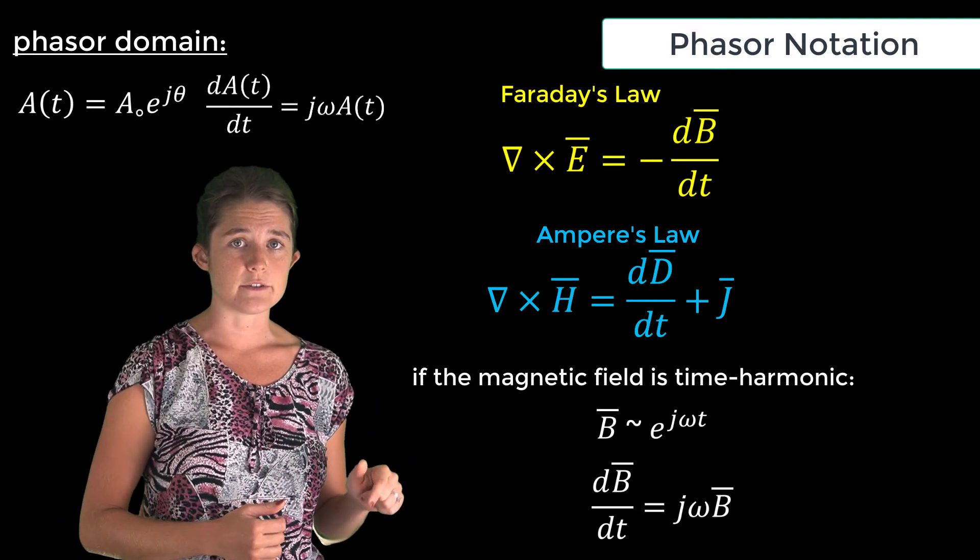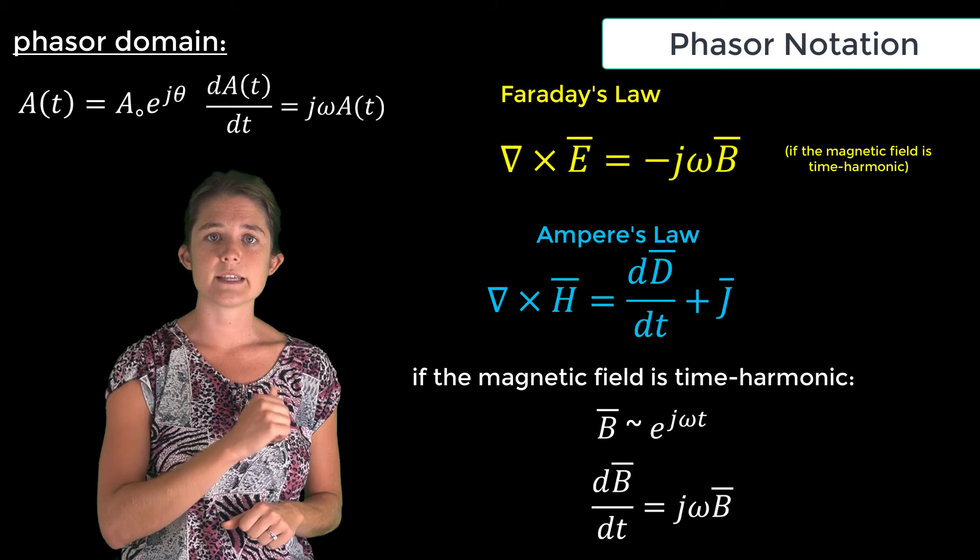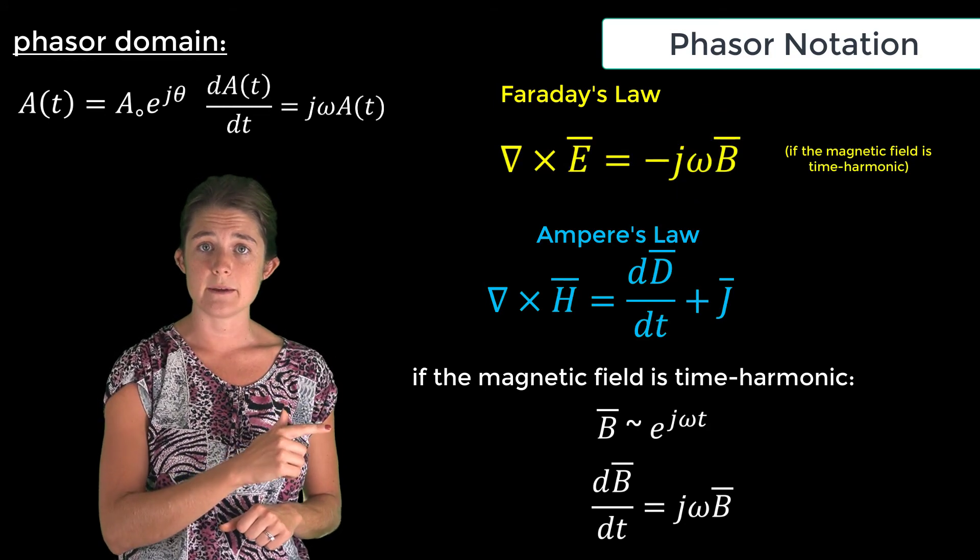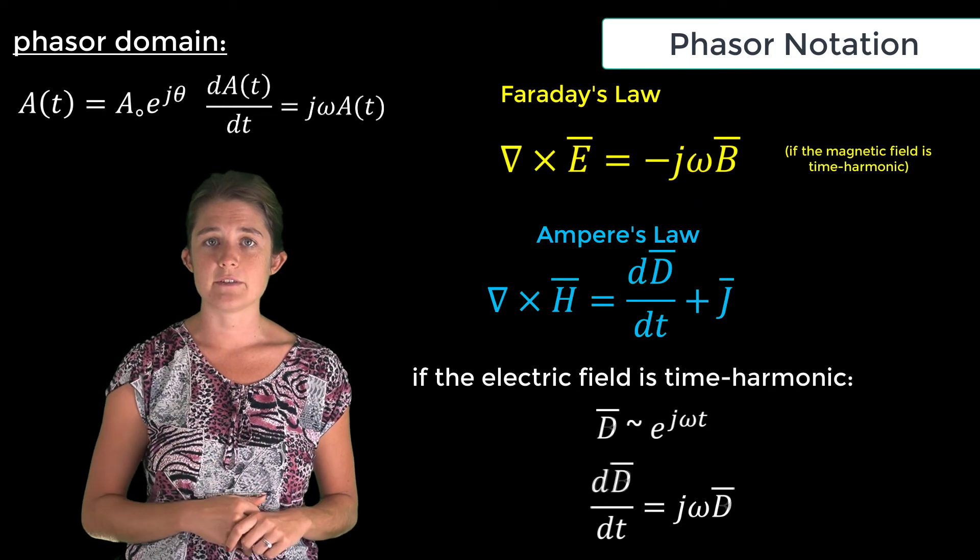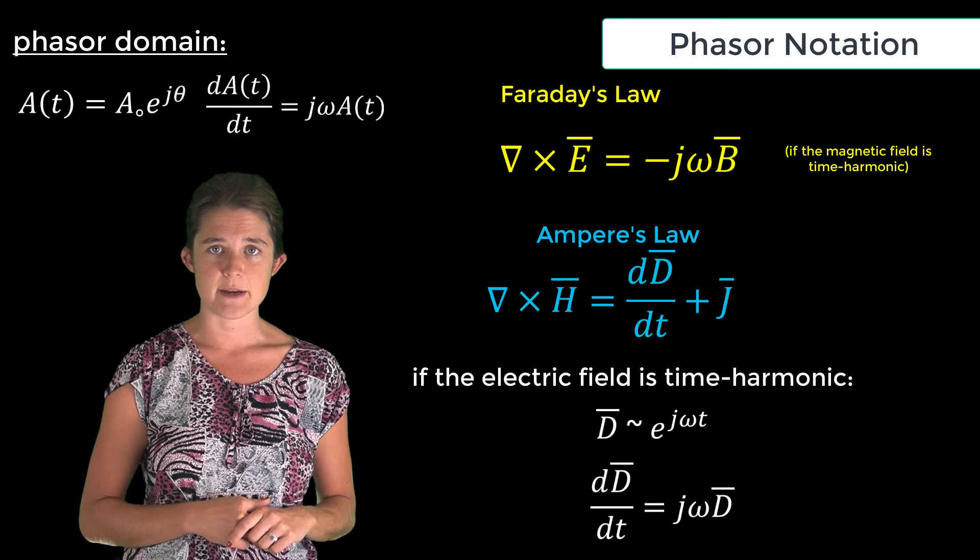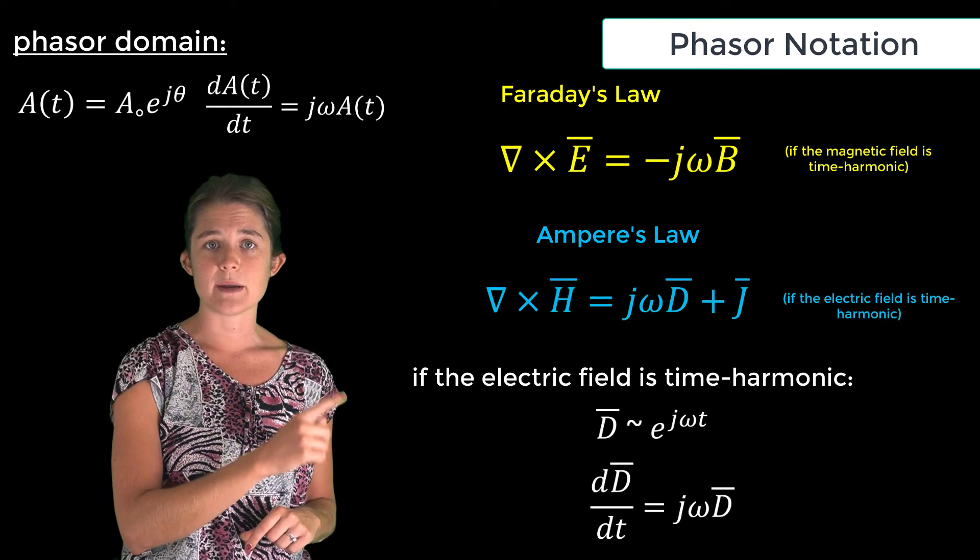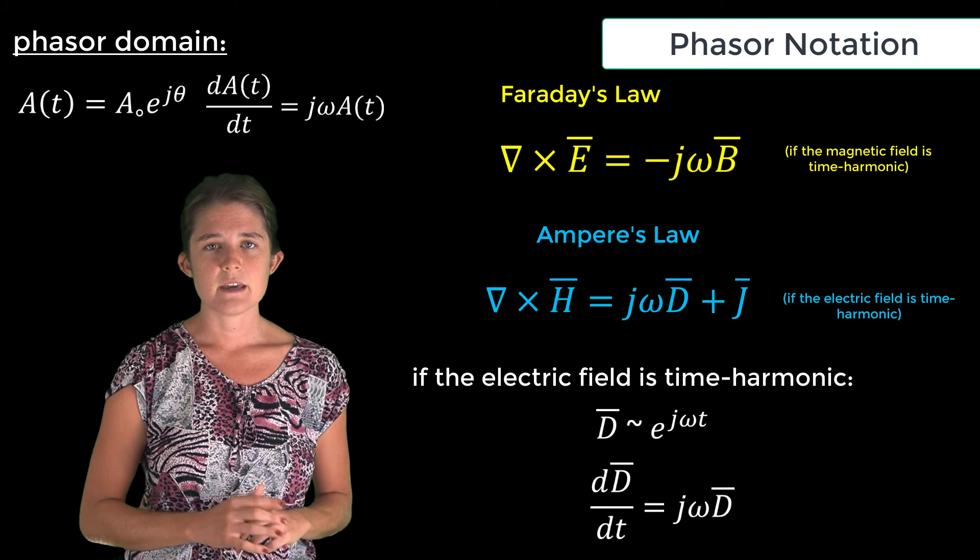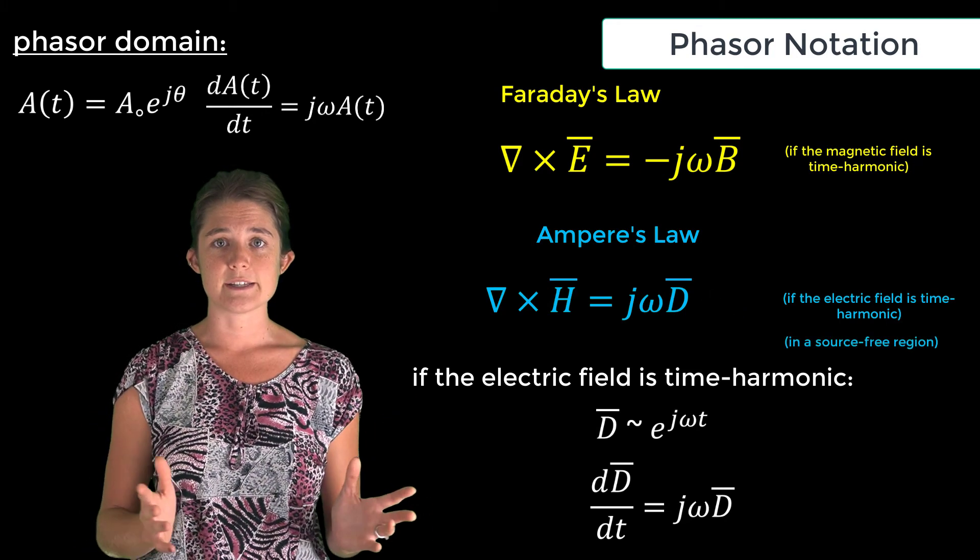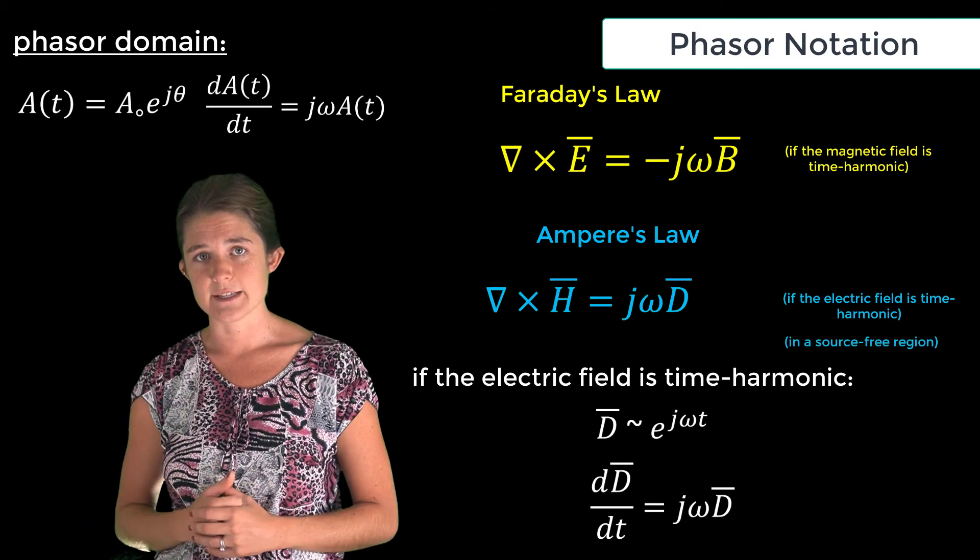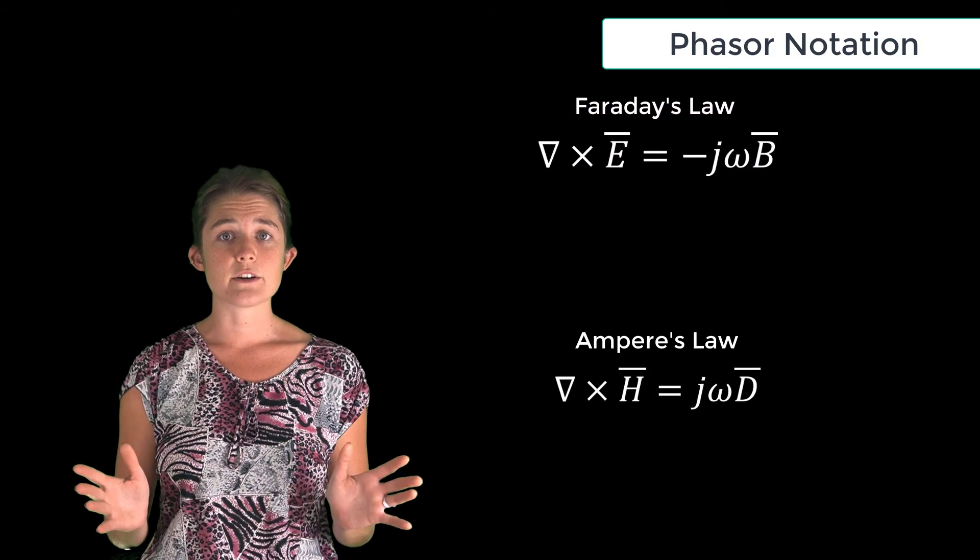Similarly, the time derivative in Ampere's law brings down a j omega, and we can write that del cross H equals j omega D plus J. In a source-free region this becomes simply del cross H equals j omega D. Notice that there are no longer any time derivatives in these equations.